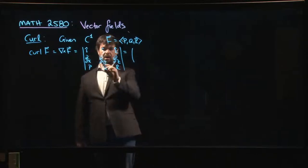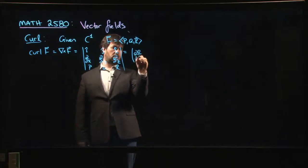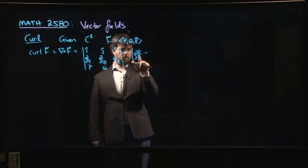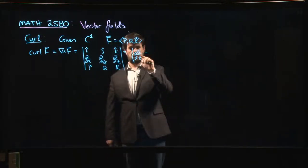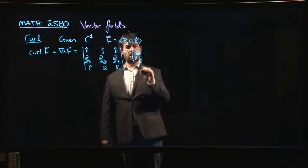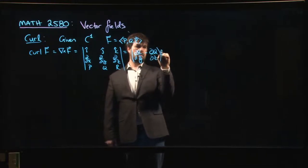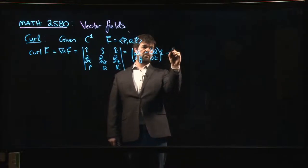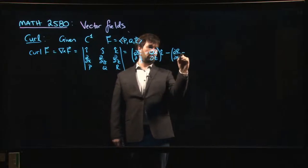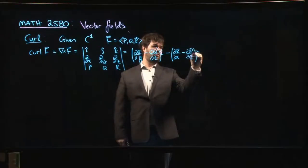So what you're going to get is, for i, you're going to get dR/dy minus dQ/dz, the i component, minus, and then it's going to be dR/dx minus dP/dz in the j component.